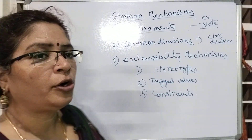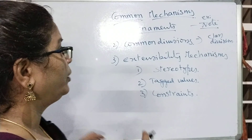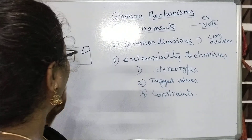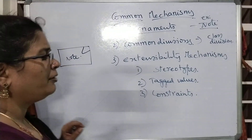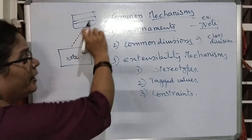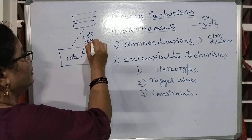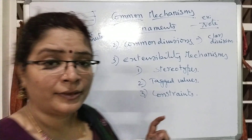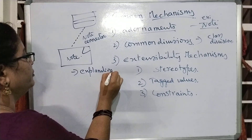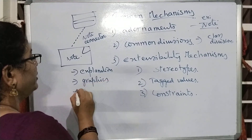Adornments means if you want to add any new add-on thing to a particular model or to a particular diagram, you can go for adornments. The best example for this adornment is 'node,' which is a dog-eared rectangle. This node can be connected to any class with the help of a node connector — it is not any kind of relation, just a node connector. Any explanation needed, you can add to this node, or you can use any kind of graphics or diagrams.